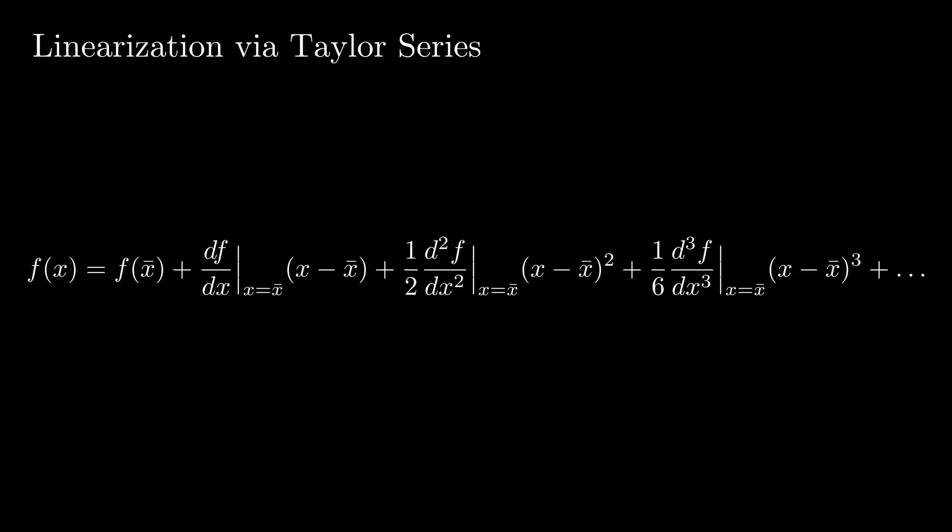So if we want to take a Taylor series expansion of a function, we need to figure out what the equilibrium points are and then we just solve each of these terms at that equilibrium point. So we get our original f at that equilibrium point, then we take the first derivative evaluated at that point and then we continue for each of the higher order derivatives after.